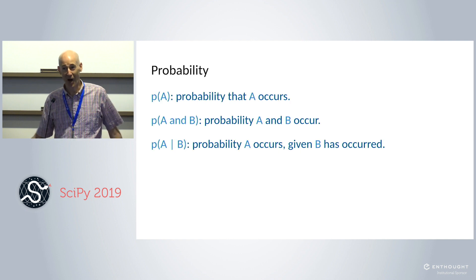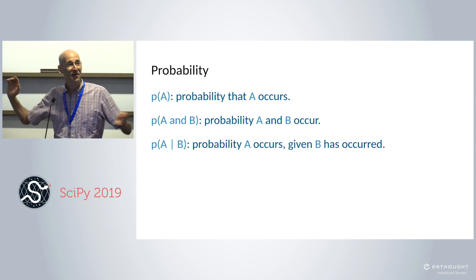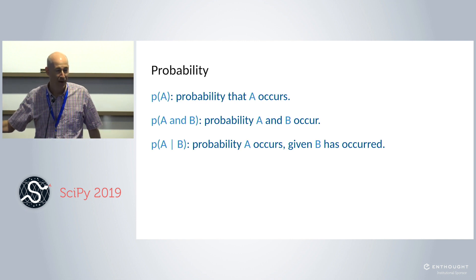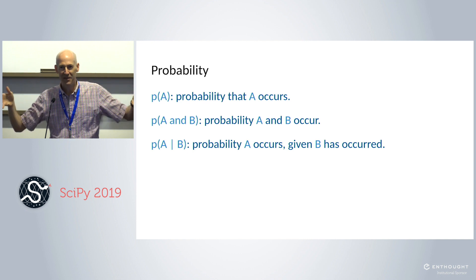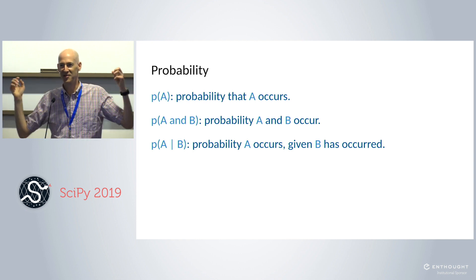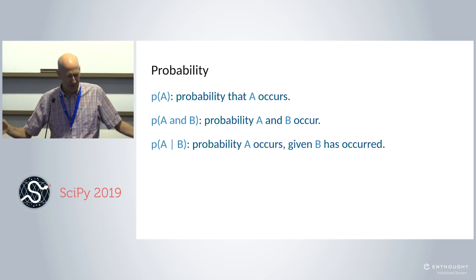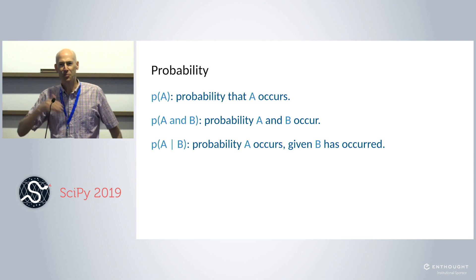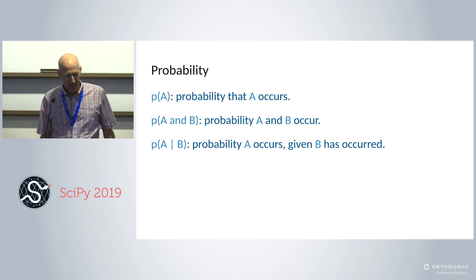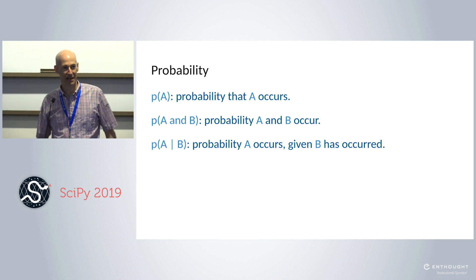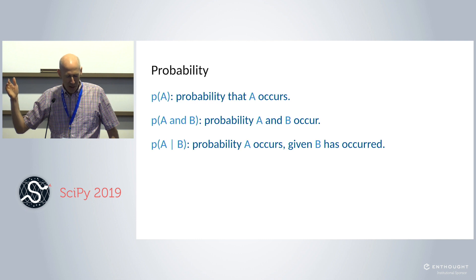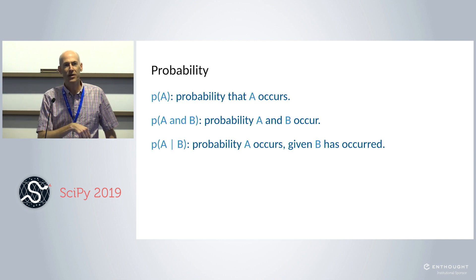Let me start with the laws of probability — this is the notation you need to know. P(A) means the probability that some event A happens. A and B means both occur. The conditional probability of A given B — that vertical bar is pronounced 'given' — is the probability of A given that we know B occurred. That's it.